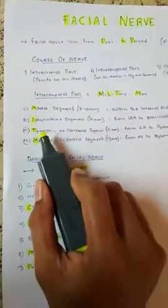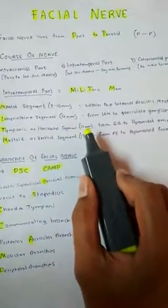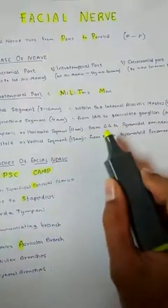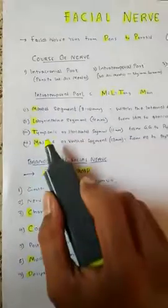The third part is T for tympanic, or horizontal segment, 11 mm in length, which extends from the geniculate ganglion to the pyramidal eminence.